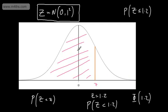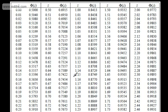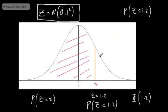Let's look at our table and find that value. What we chose is 1.2, so phi of 1.2 is 0.8849. So the probability that Z is less than 1.2 is going to be around 88.5%.